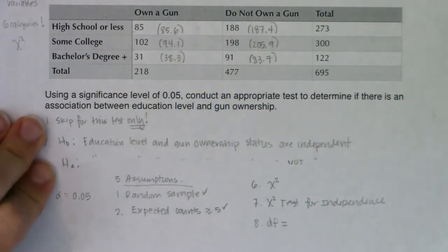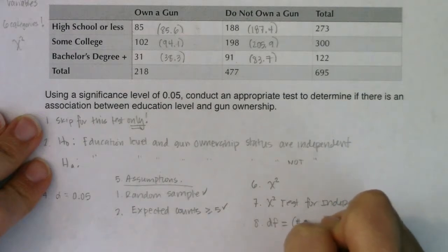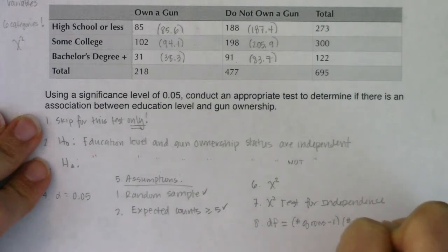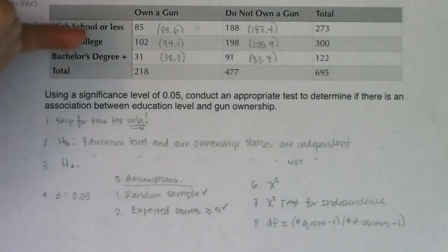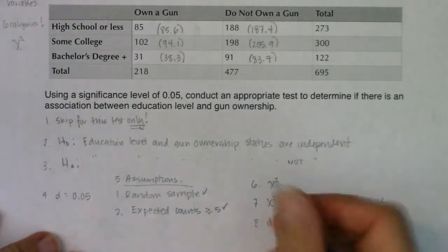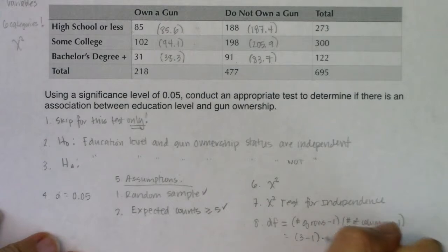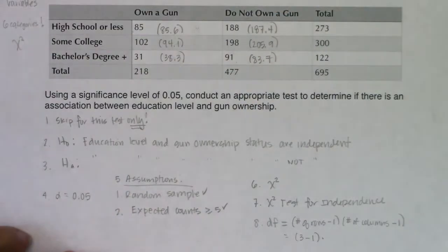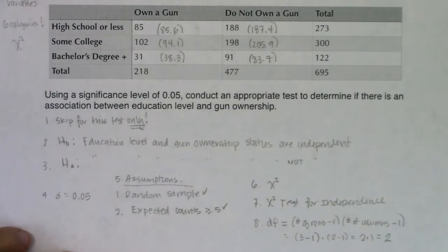Step eight: degrees of freedom. This also has a different formula — it's not number of categories minus one anymore. Now it's number of rows minus one times number of columns minus one. For education level I had three rows, and for gun ownership I had two columns. So degrees of freedom equals (3 − 1) × (2 − 1) = 2 × 1 = 2.